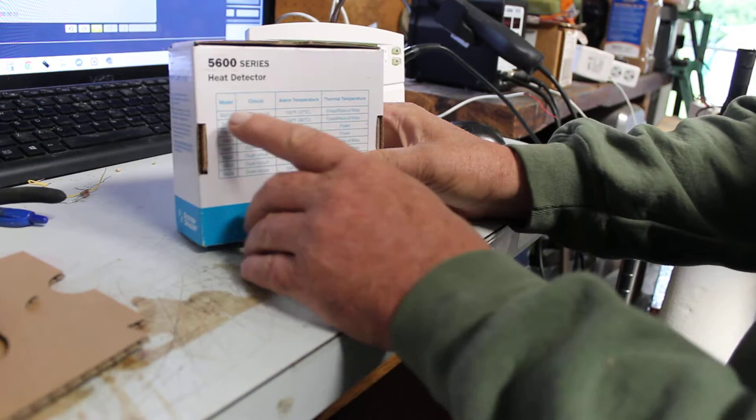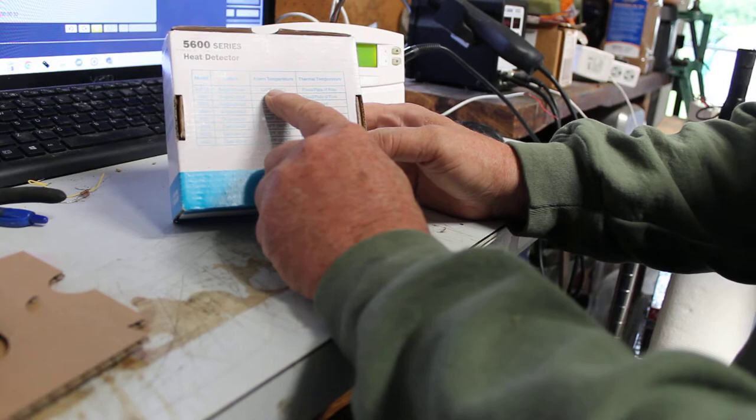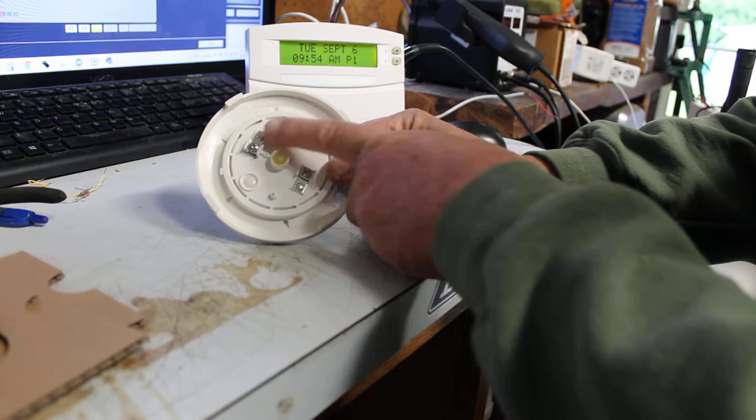This one here is a 5600 series, actually a 5601P, which is a single circuit 135 degree Fahrenheit fixed rate of rise. Let's just get the box out of the way. I'm going to take it out of the base so you can see it a little bit better.